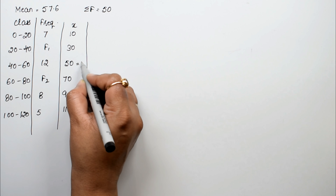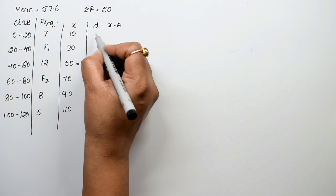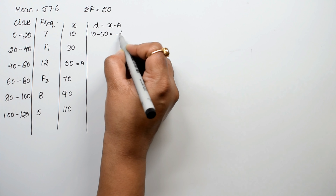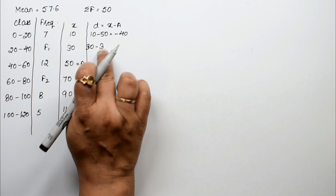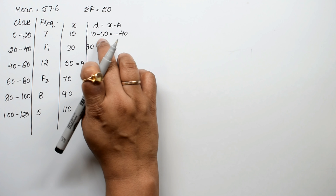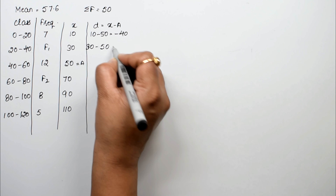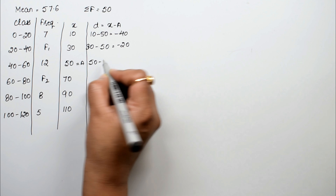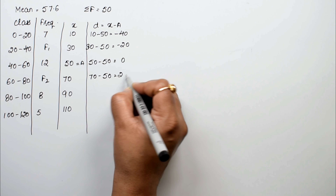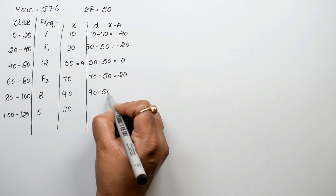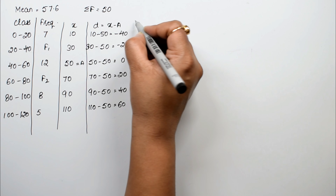Now we take the assumed mean. We write d equals x minus assumed mean, where our assumed mean is 50. So: 10 minus 50 equals minus 40, 30 minus 50 equals minus 20, 50 minus 50 equals 0, 70 minus 50 equals 20, 90 minus 50 equals 40, and 110 minus 50 equals 60.